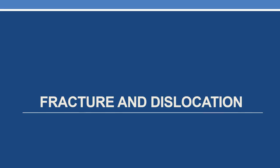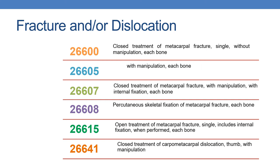Now coming to the codes of fracture and dislocation. The first CPT is 26600: closed treatment of metacarpal fracture, single, without manipulation, each bone. With manipulation is given by 26605. Closed treatment with manipulation with internal fixation is given by 26607. With percutaneous skeletal fixation is given by 26608. Next is 26615: open treatment of metacarpal fracture, single, including internal fixation when performed, each bone.